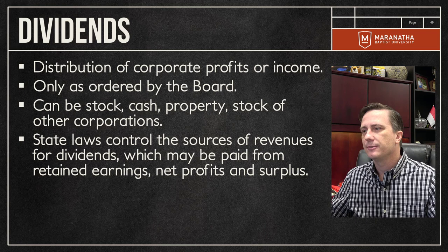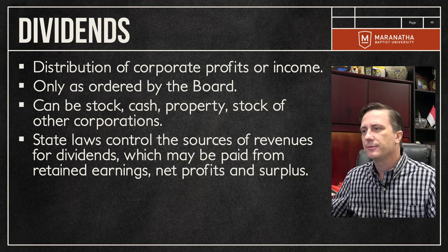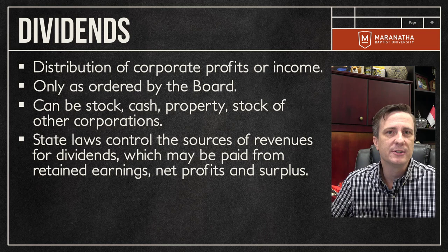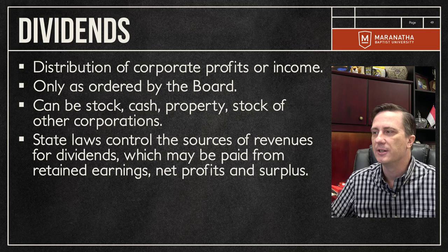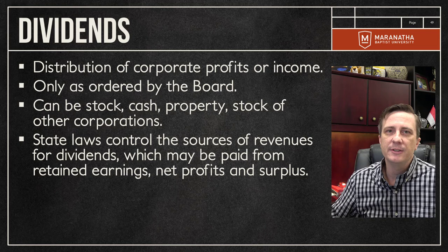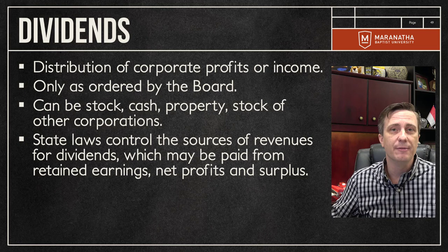Dividends are ordered by the board of directors — they vote to pay out the company's profits based on the number of shares held. Dividends can be issued as cash, additional stock, property, or even stock in other corporations. Some state laws also specify what sources of revenue may be used to pay dividends.